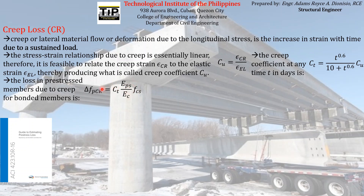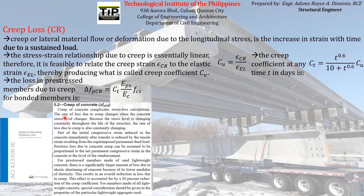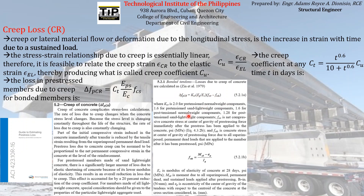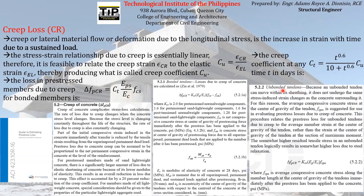That is one way to compute the pre-stress loss due to creep. There is another way, which is enumerated or specified on ACI 423.10, which is the guide to estimating pre-stress loss reported by Joint ACI-ASCE Committee 423. The corresponding formula is found on Section 5.2, Creep Coefficient. These are the corresponding provisions you can find on 5.2.1 to find the pre-stress loss due to creep for bonded tendons, and Section 5.2.2 for unbonded tendons.